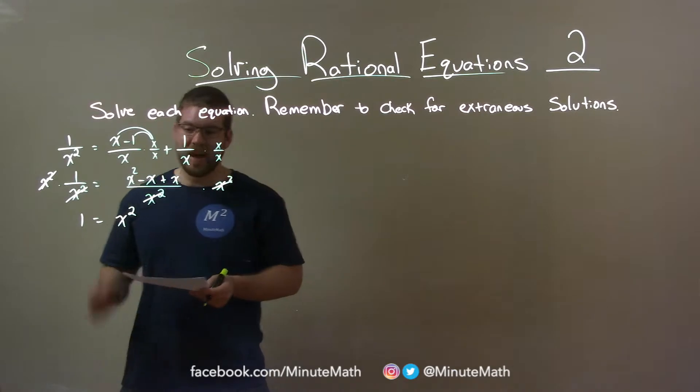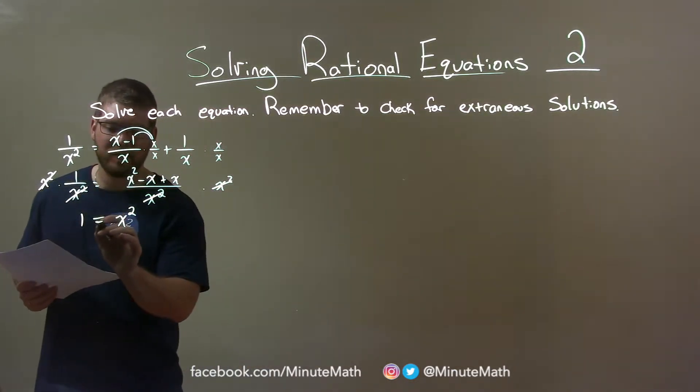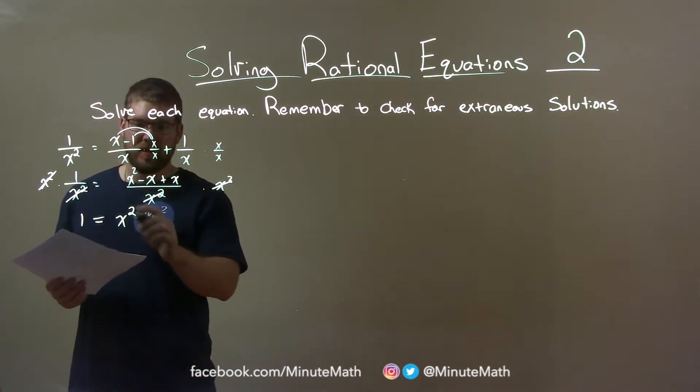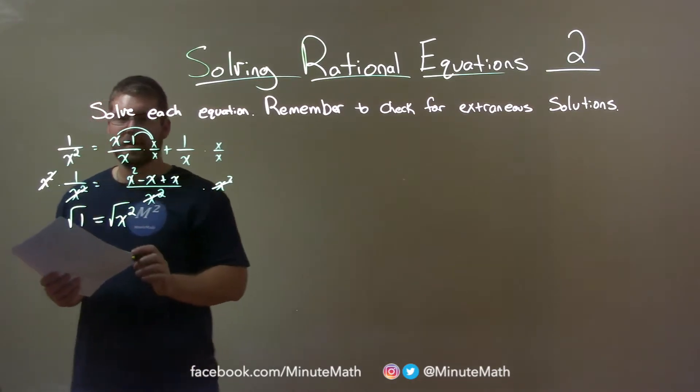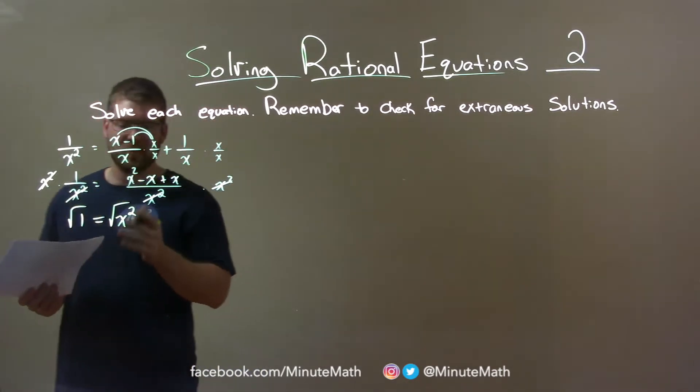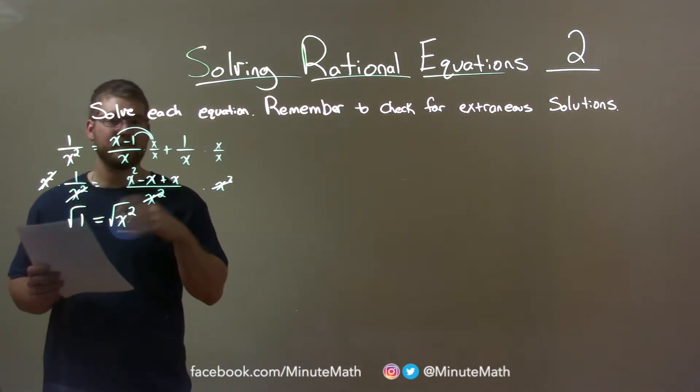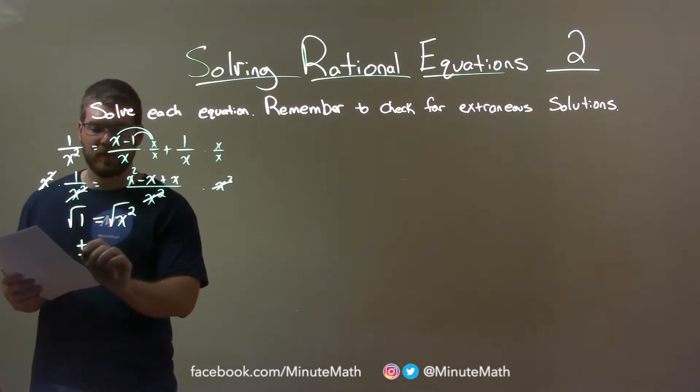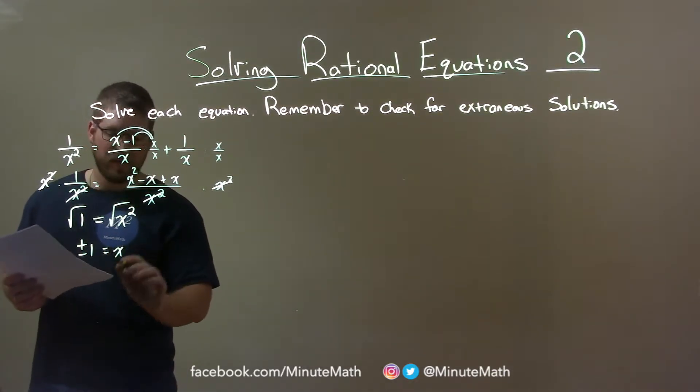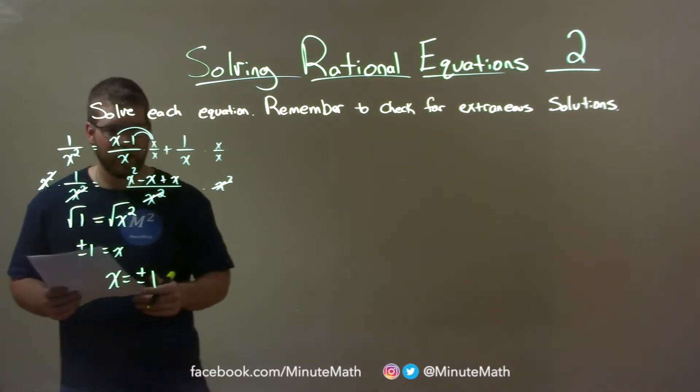So now we have 1 equals x squared. Remember, to get rid of that, we square root both sides. Well, square root of 1 is just 1, but since we took the square root over the equal side, plus or minus. So x is plus or minus 1.